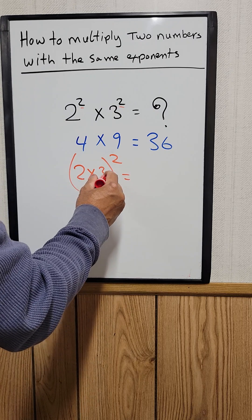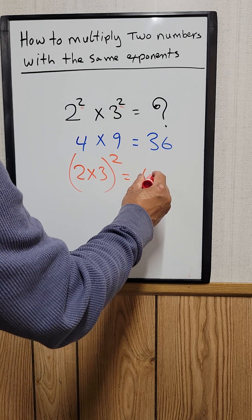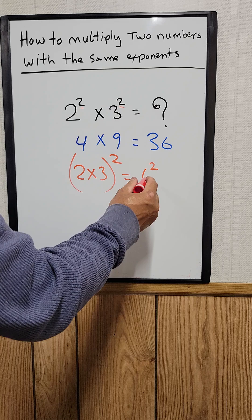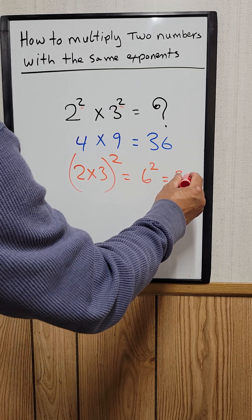So what is 2 times 3 would be 6. And raise to the second power, so 6 squared is equal to 36.